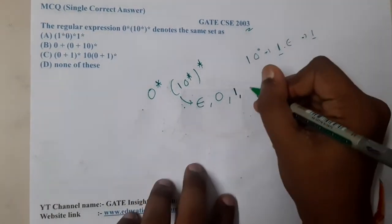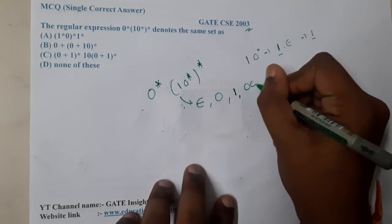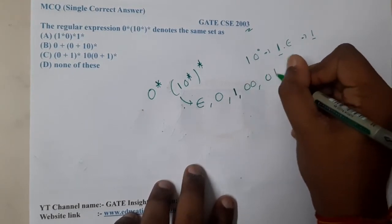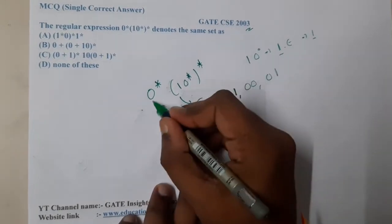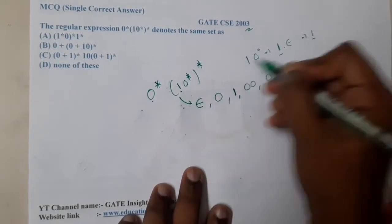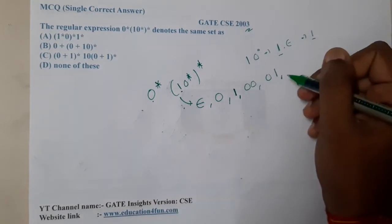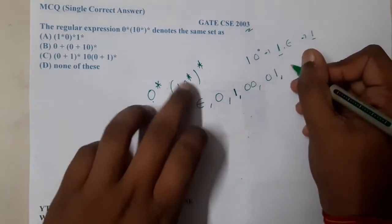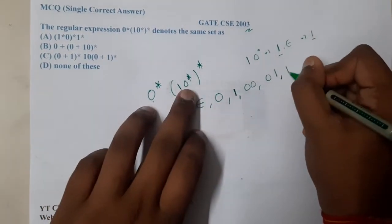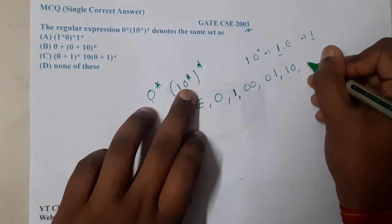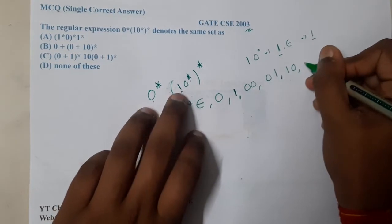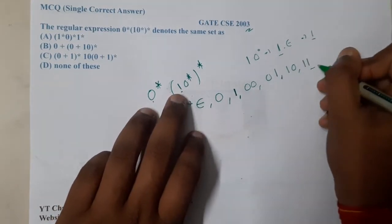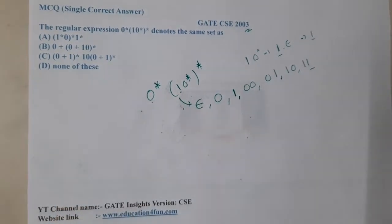What about zero-zero? Possible. What about zero-one? From here I take zero, from here I take one — possible. I can generate double one also. So almost everything is possible here. Let us check the options.